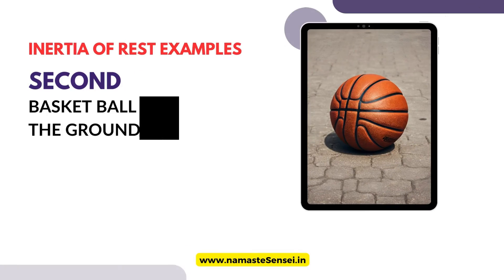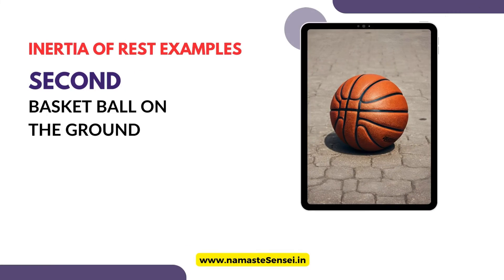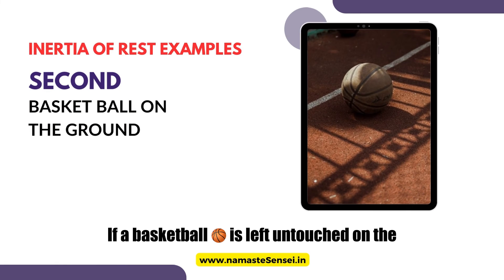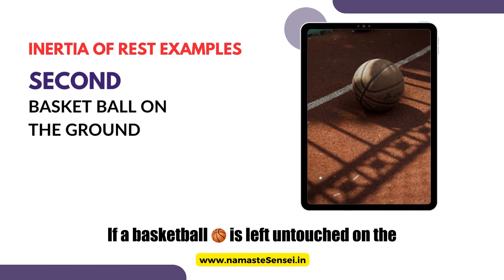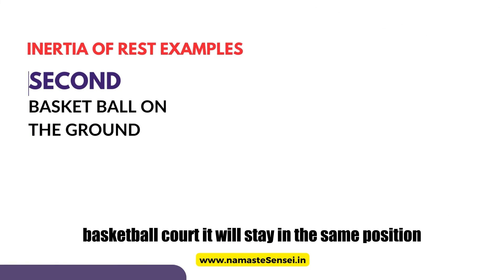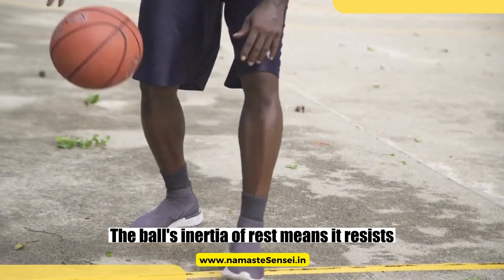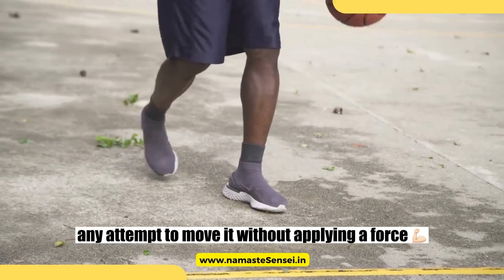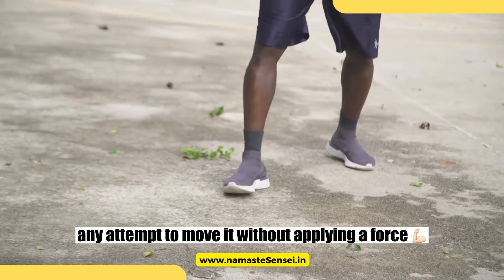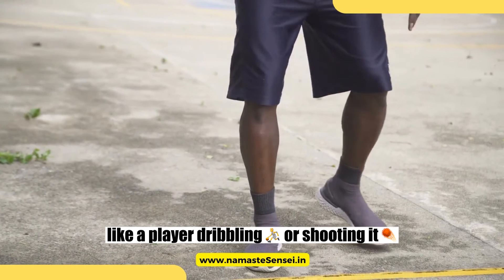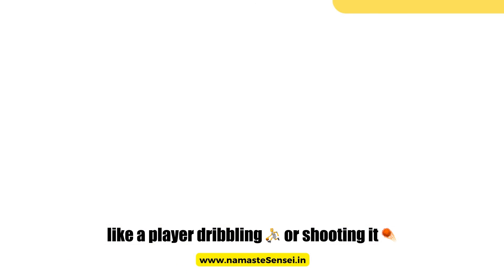Second, basketball lying on the ground. If a basketball is left untouched on the basketball court, it will stay in the same position. The ball's inertia of rest means it resists any attempt to move it without applying a force, like a player dribbling or shooting it.